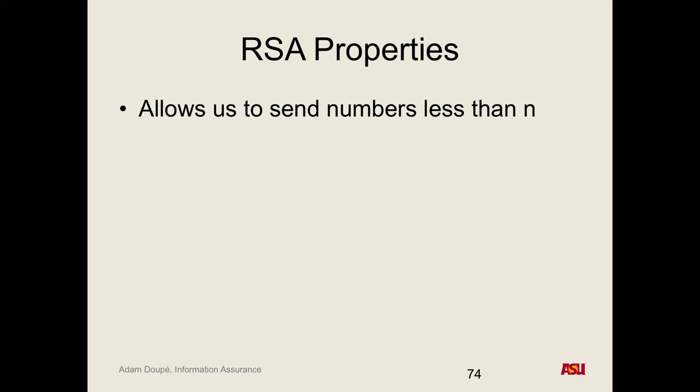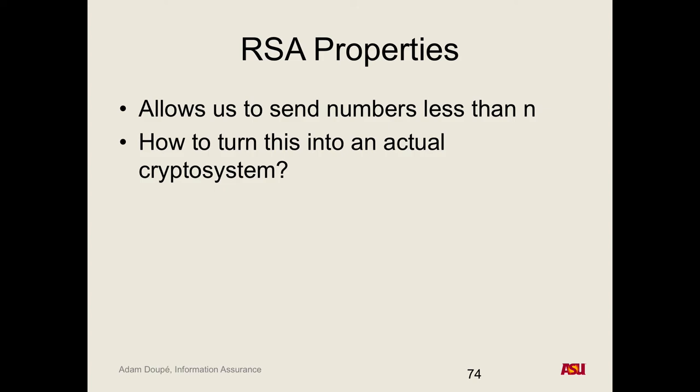One property of RSA is it only allows sending messages whose integer value is less than N — the bit length of N defines the maximum message size. This is a fundamental limitation. To turn RSA into a real crypto system capable of sending arbitrary messages, we need a strategy: breaking up text into fixed block sizes and encrypting each with the public key is one option, but it has problems.